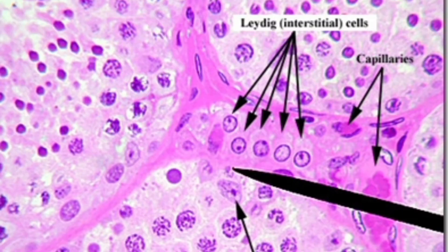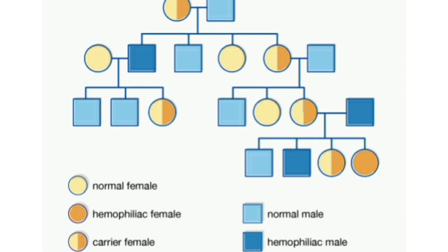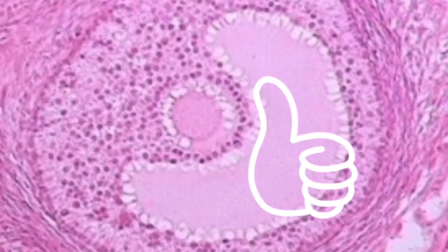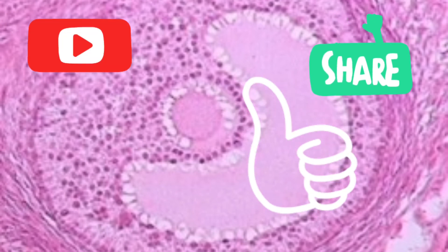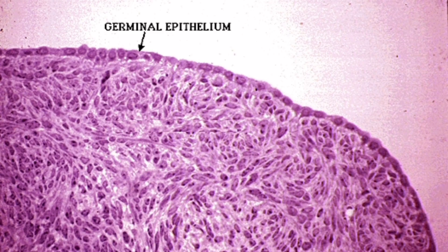That was all about the TS of testis and ovary spotting activity. In the next video I will discuss pedigree analysis, which is also another spotting activity for you. Stay tuned for further videos. If you liked it, do share it with your friends and don't forget to subscribe to my channel. Thanks for watching.